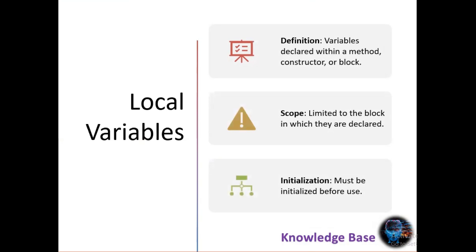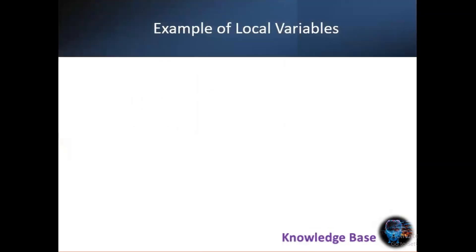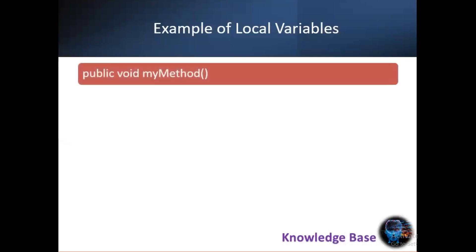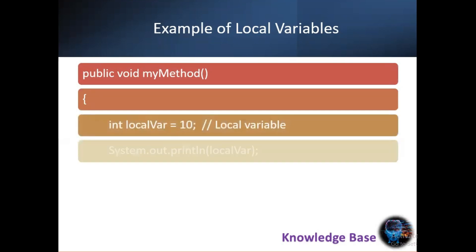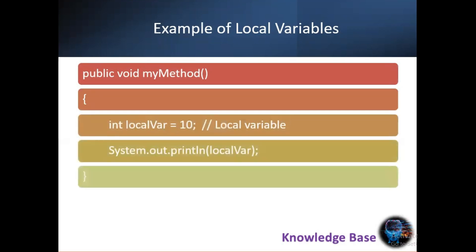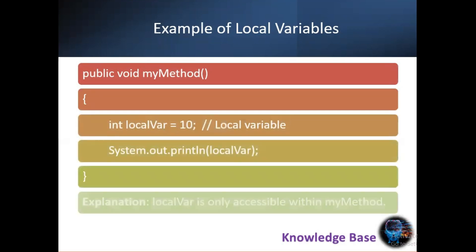Here is an example of a local variable in Java. In this code, 'localVar' is a local variable declared inside the 'myMethod' method. It is only accessible within this method. If we try to access 'localVar' outside of 'myMethod', the compiler will throw an error because it doesn't exist outside this scope.